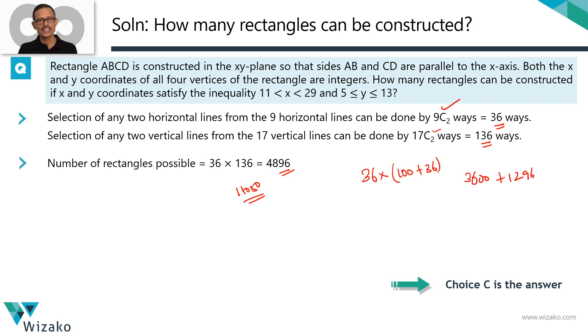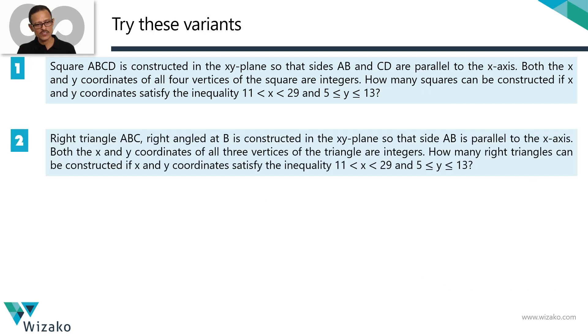Revisit this video once more to get a good idea about how we went about solving this. As I mentioned, I'm going to leave you with two variants. Both of these are also classics. I'm not changing any data here. Instead of saying rectangle ABCD, I'm now changing it to square ABCD.